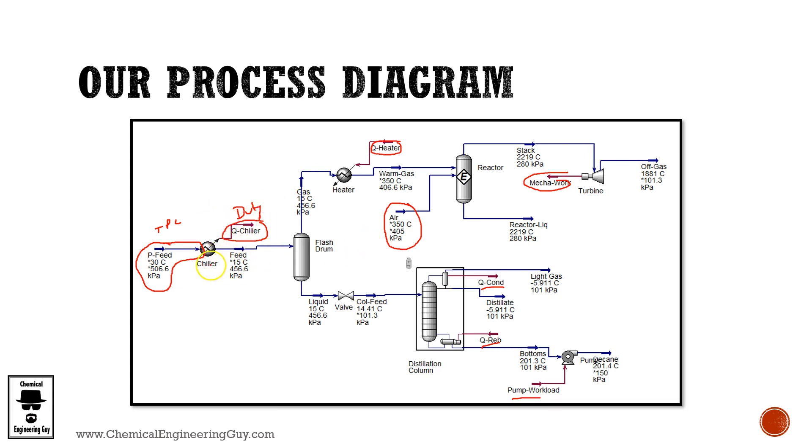Anyways let's check out the unit operations. We got a chiller, we got a heater, we got a reactor which will be acting as a combustion chamber, we got this turbine most likely because we want to take advantage of the combusted fuels, we got this valve which is also a pressure changer.